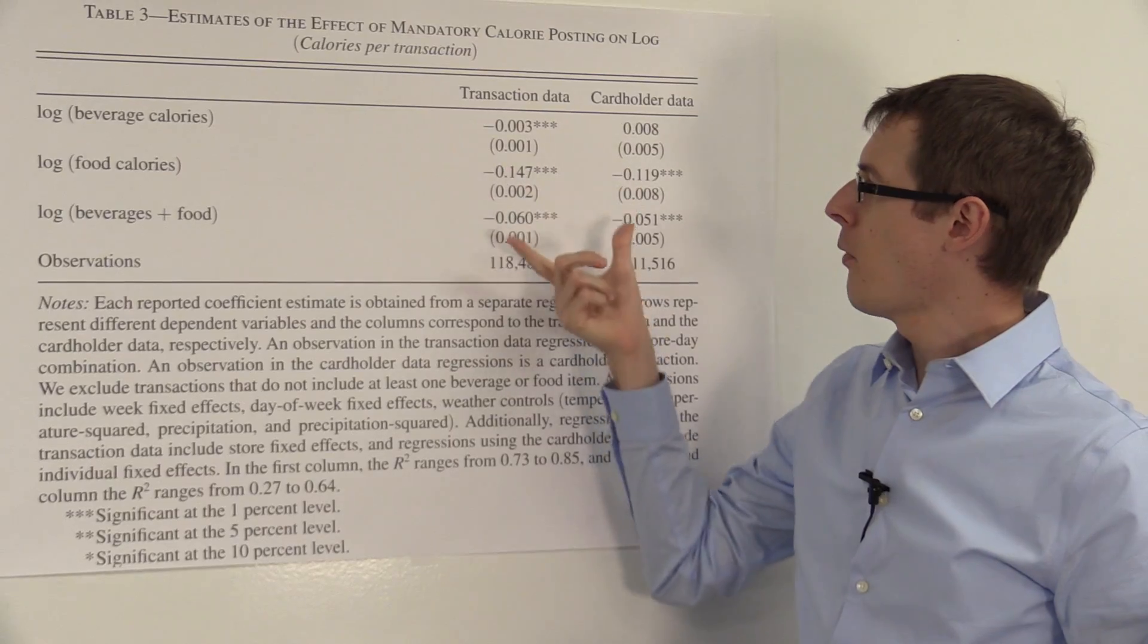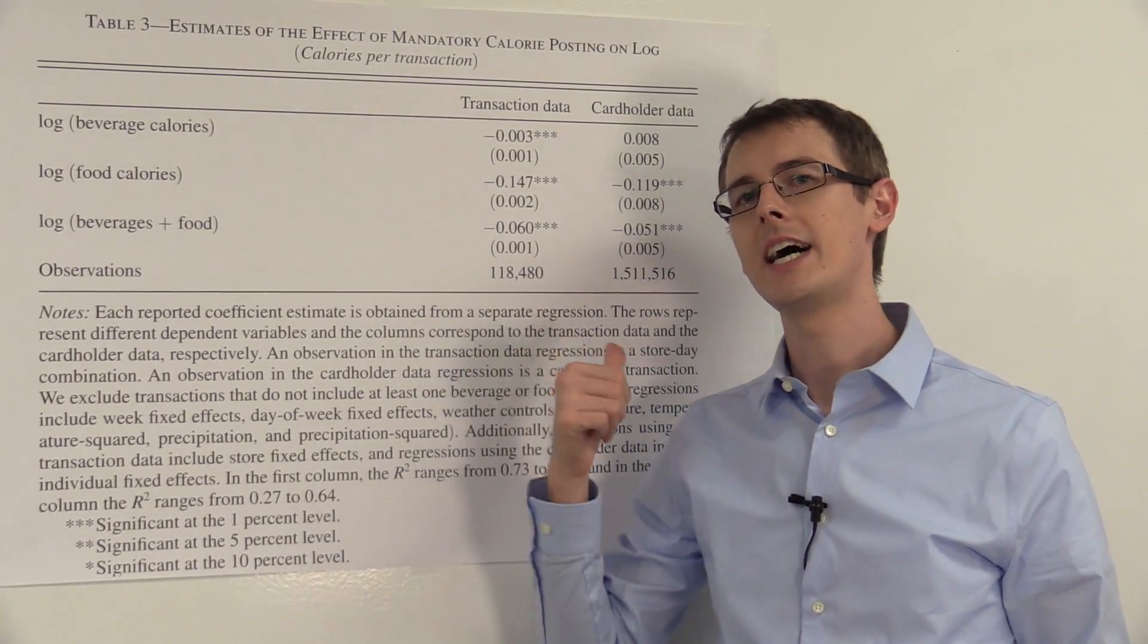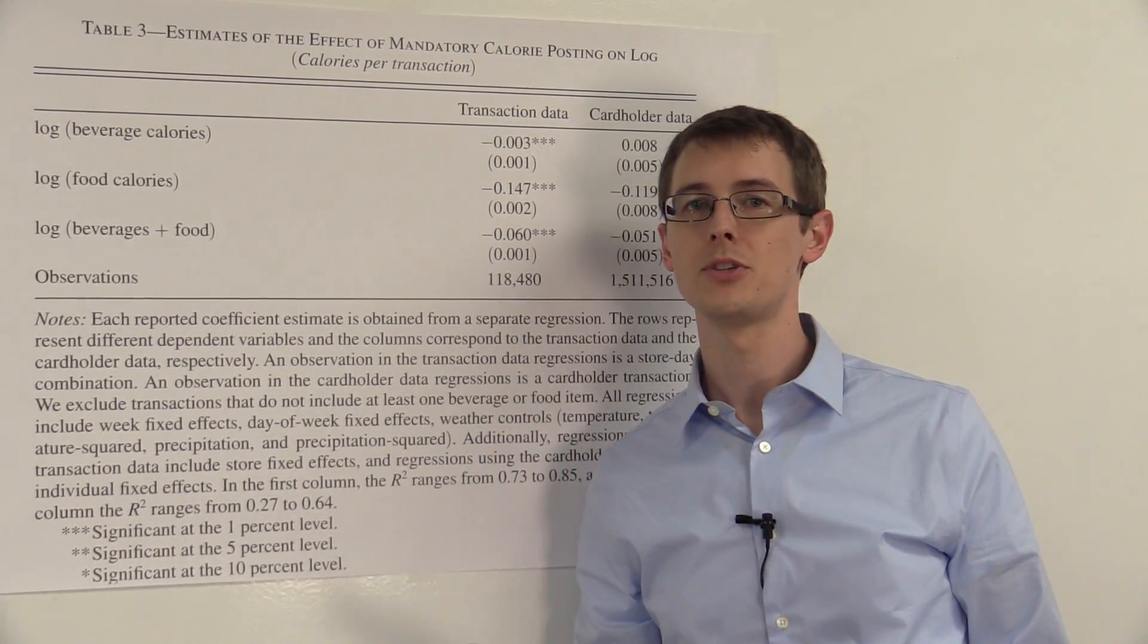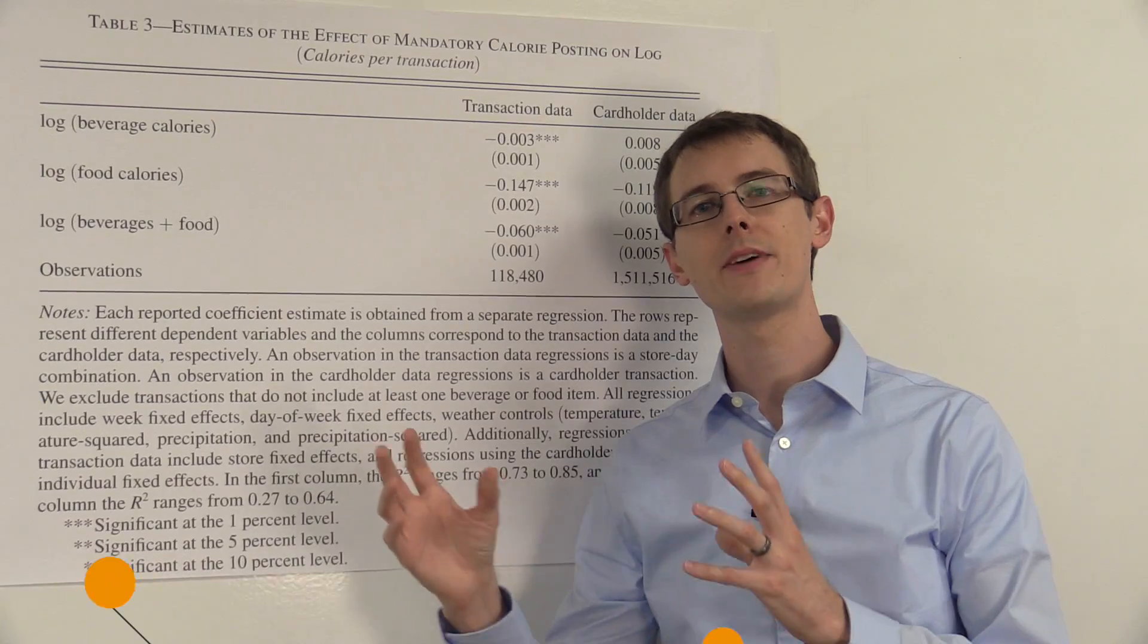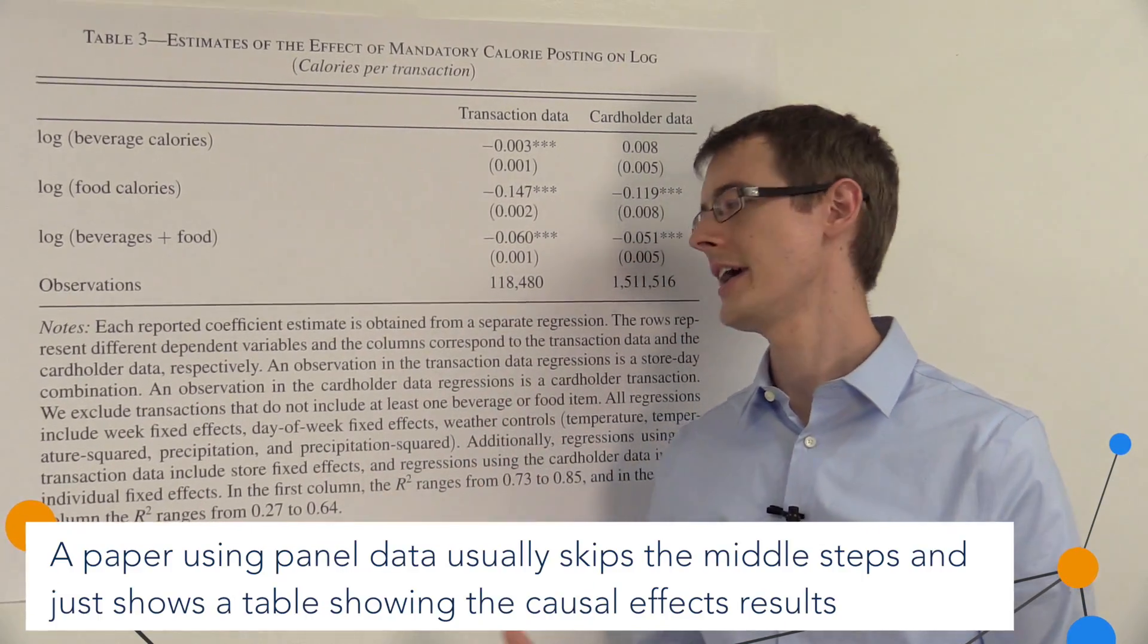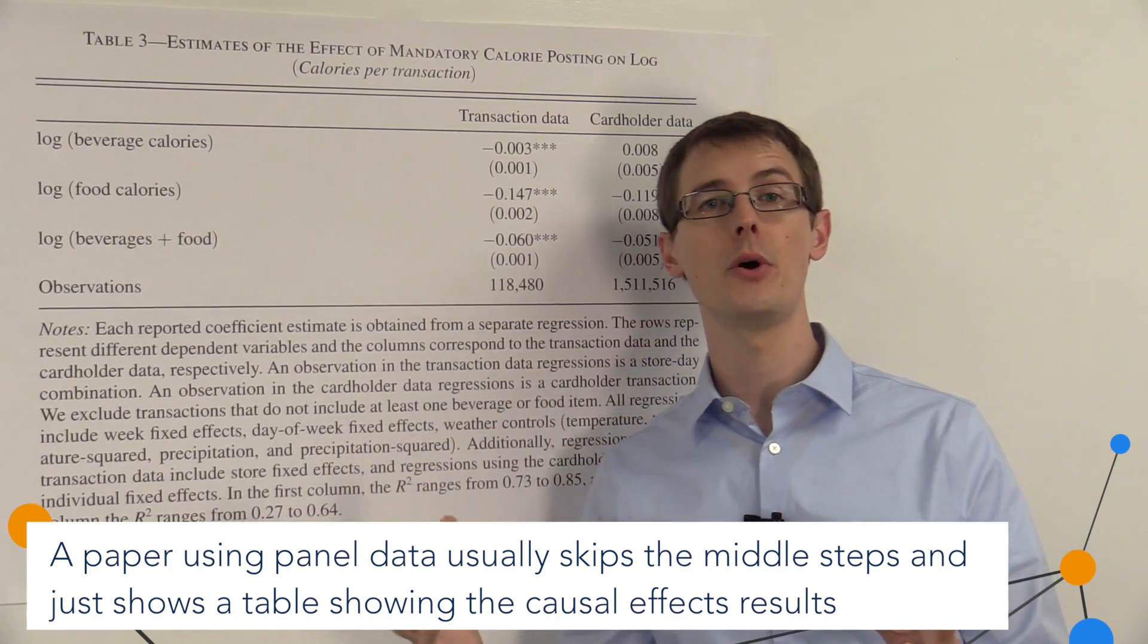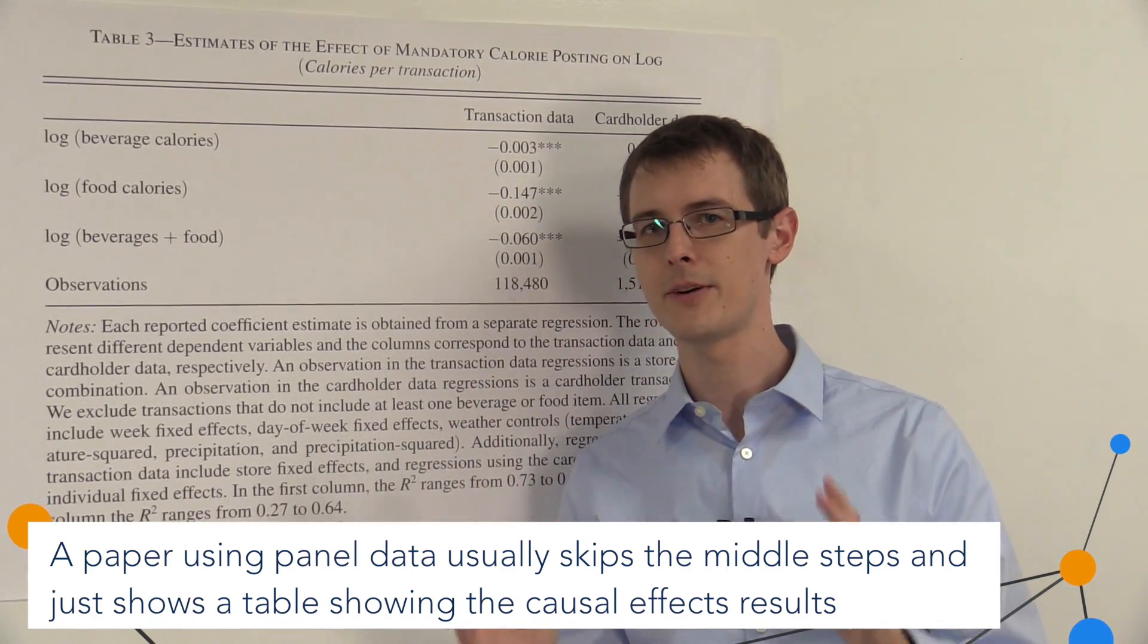Now the important thing I wanted to talk about this table is that usually this is the kind of thing you'll see when you're looking at papers about panel data and causality. The difference-in-differences kind of calculations are a little more special. This is the kind of thing you'll see most of the time. They'll go straight to this table where they're showing you the causal effects. But remember the main idea is the same as in difference-in-differences.